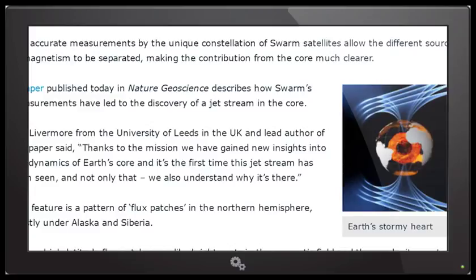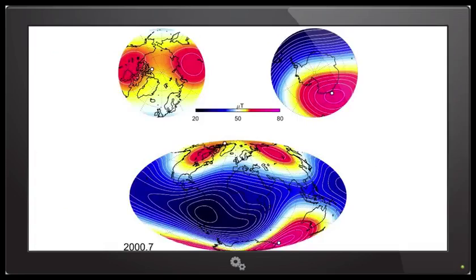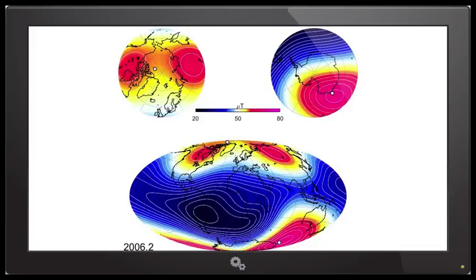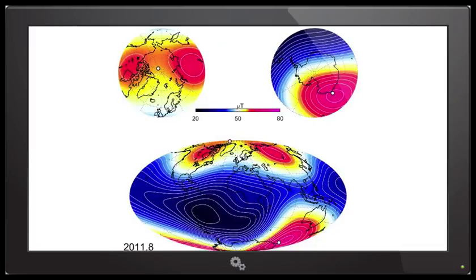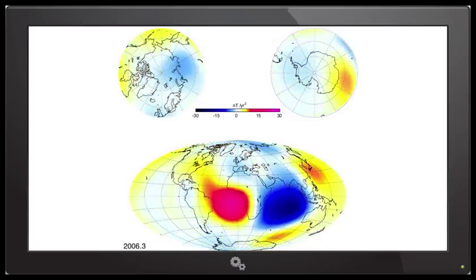The paper published in Nature Geoscience describes how Swarm's measurements have led to the discovery of a jet stream in the core. Phil Livermore from the University of Leeds in the UK and lead author of the paper said, thanks to the mission, we have gained new insights into the dynamics of Earth's core, and it's the first time the jet stream has been seen, and not only that, we also understand why it's there. Flux patches.